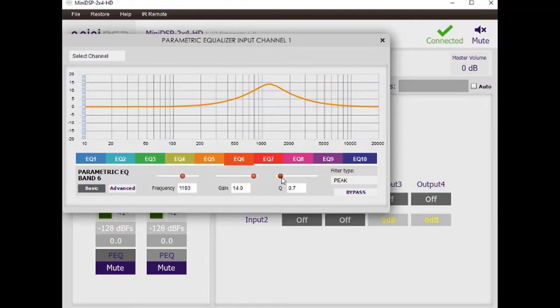And then the Q can be varied anywhere from 50 to 0.5 and the higher the Q number, the narrower the filter shape.